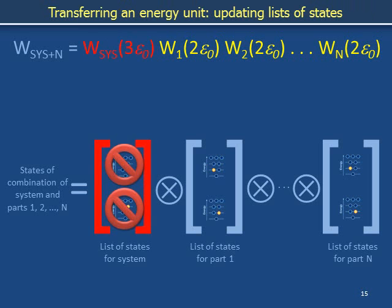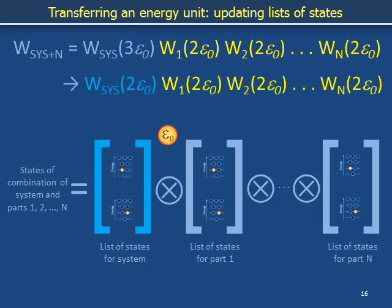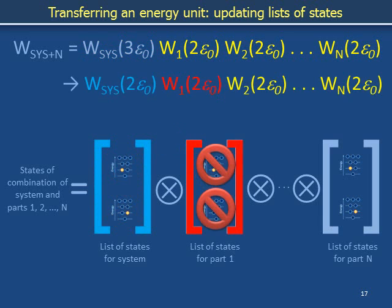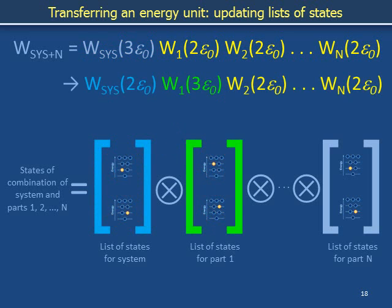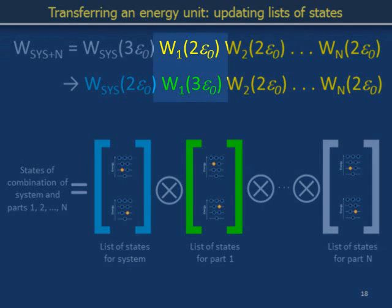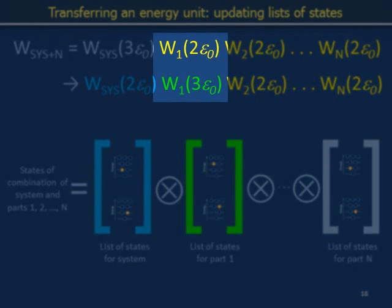Consider an alternative situation. The system no longer has energy 3ε₀; one unit of energy ε₀ is to be transferred to the bath. The system is in a state with energy 2ε₀. As an example, we can stuff the orphaned unit of energy into part 1. The number of ways to find part 1 with energy 2ε₀ is replaced by the number of ways to find part 1 with energy 3ε₀. In this particular example these numbers are the same — two ways to arrange part 1 at each energy level — but we keep track of them as separate variables.